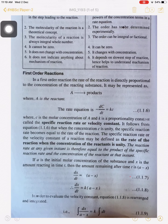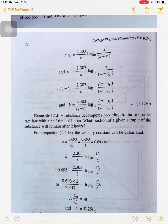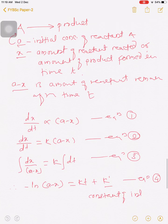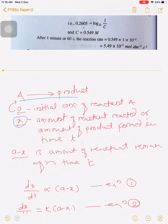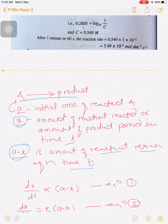Now, suppose A is the initial concentration of reactant in A → product. Here, x is the amount of reactant converted into product at time t, and a minus x is the remaining concentration of the reactant at time t.